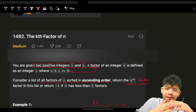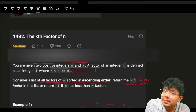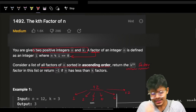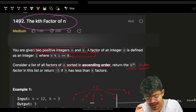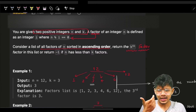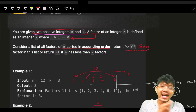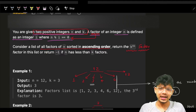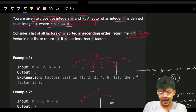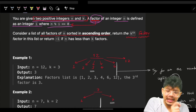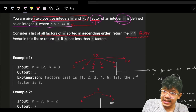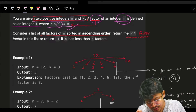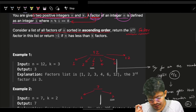After this video you'll be very familiar with factors, divisors, and how to efficiently compute them. We need to find the kth factor of n. We're given two positive integers n and k. A factor of an integer n is defined as an integer i where n mod i equals 0.